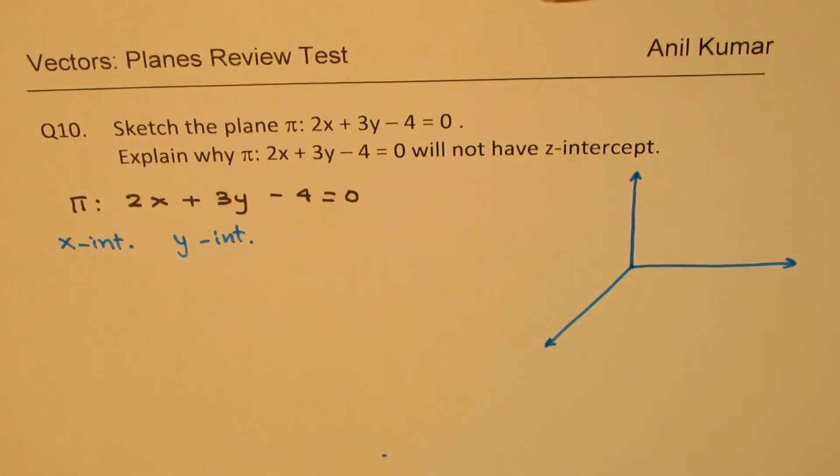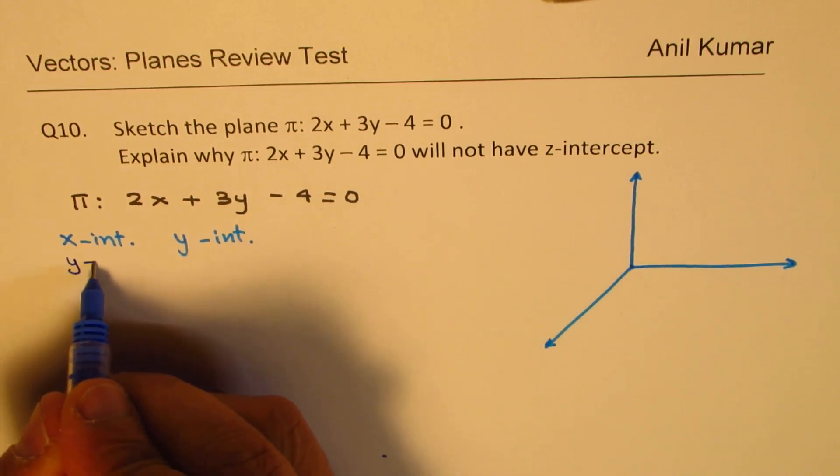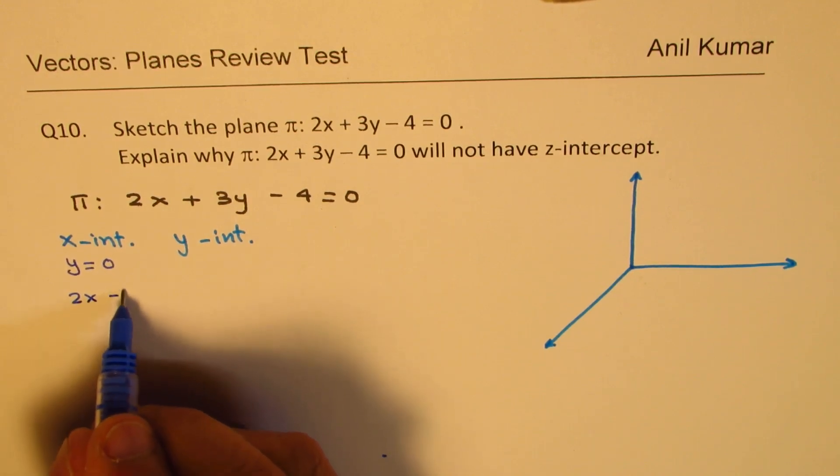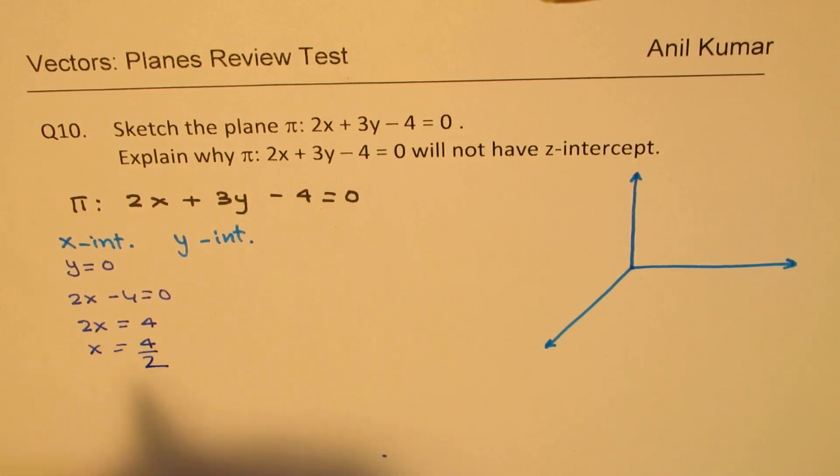For x-intercept, in this equation, y and z should be 0. We'll put y = 0, and so we get 2x - 4 = 0, or we have 2x = 4, x = 4/2.